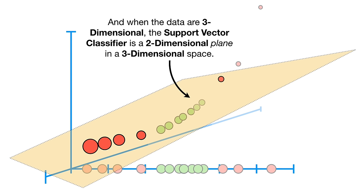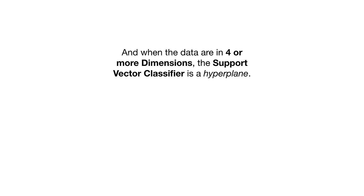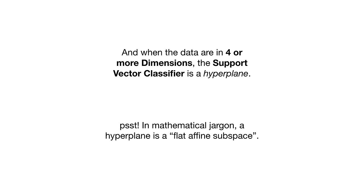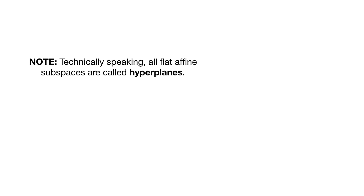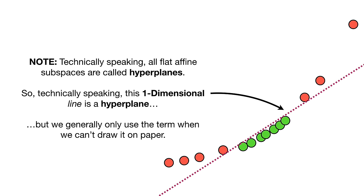When the data are three-dimensional, the support vector classifier is a two-dimensional plane in a three-dimensional space — in mathematical jargon, a flat affine two-dimensional subspace. When the data are in four or more dimensions, the support vector classifier is a hyperplane — in mathematical jargon, a flat affine subspace. Technically speaking, all flat affine subspaces are called hyperplanes, so even a one-dimensional line is technically a hyperplane, but we generally only use the term when we can't draw it on paper.